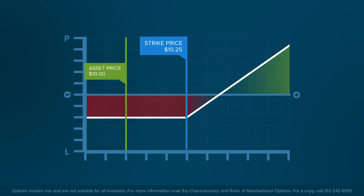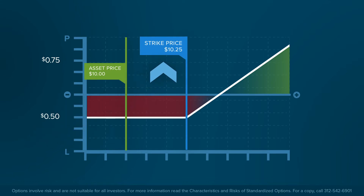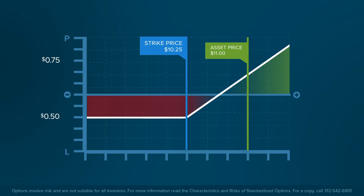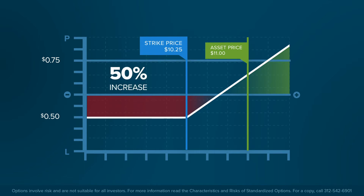In the example, a premium of $0.50 is paid for a call option with a strike price of $10.25. If the market value of the underlying asset price rises to $11, the option value rises to $0.75 and can be sold for an increase of 50%.